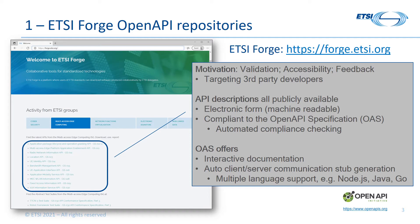This is highly powerful when commencing application development, because if the communication stubs are created using the same description file, developers can be confident their application will be able to communicate with the service. These aspects have made OpenAPI adoption very attractive to the ISG, also helping ensure integrity and completeness of our specifications.